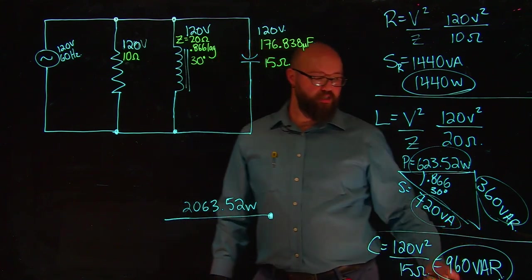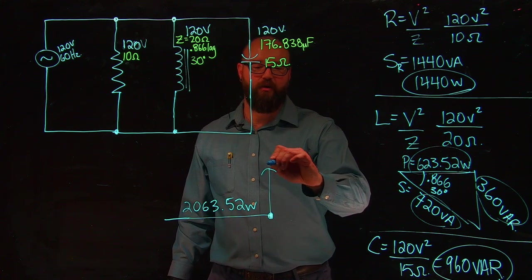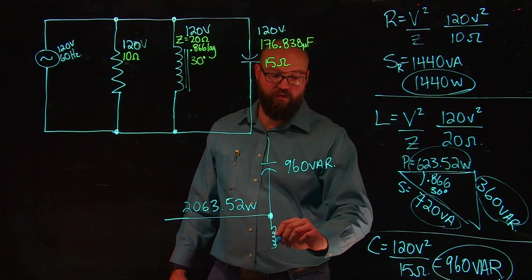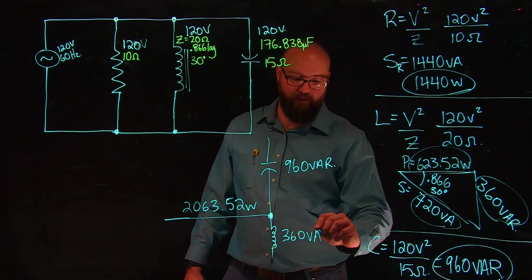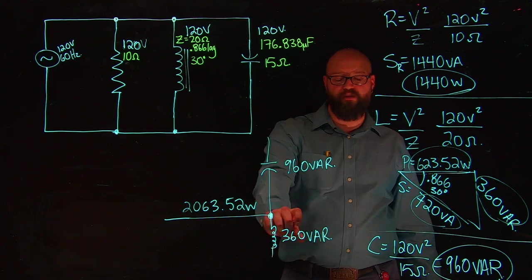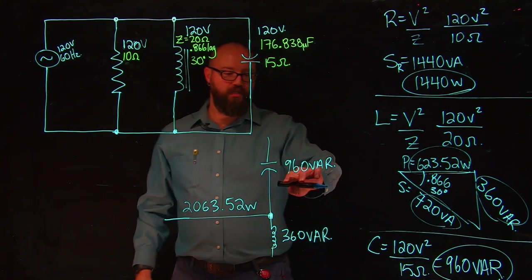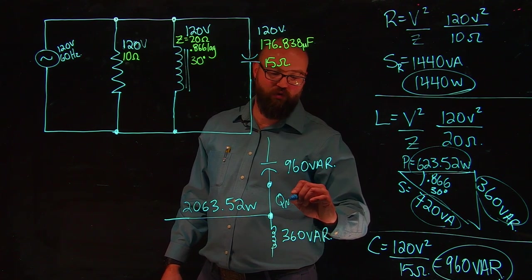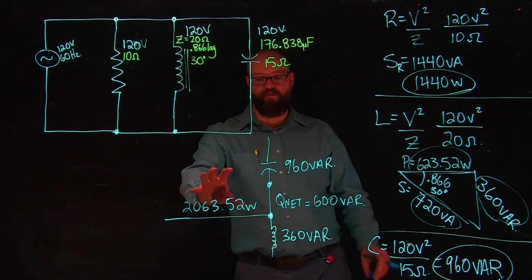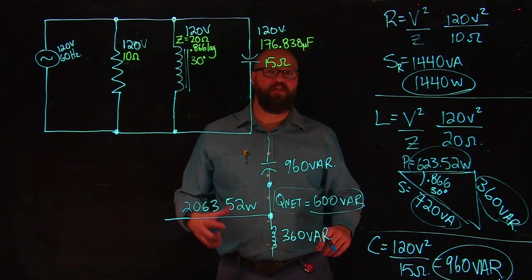Then what we're going to do is we're going to take our out-of-phase components, our reactive power, and we're going to compare those two together. I know that from my capacitor, I have a leading 960 VARs, and from my inductor, we calculated that we have 360 VARs lagging. And when I put these two together, I know that these lagging VARs are going to cancel out some of these leading VARs, and vice versa, however you want to look at it. But either way, these 360 VARs are going to cancel out 360 of these leading VARs. 960 minus 360, we end up with a net, we're going to call it Q net, or reactive net, of 600 VARs. Now, if we think about this, we have a total in-phase component, we have a net out-of-phase component, and we can use this to build a circuit power triangle.